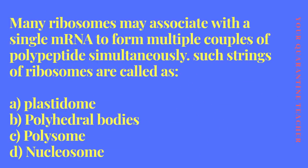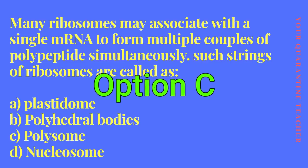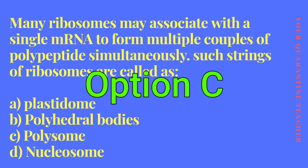Many ribosomes may associate with a single mRNA to form multiple polypeptides simultaneously. Such strings of ribosomes are called: Option A: plastidome, Option B: polyhedral bodies, Option C: polysome, Option D: nucleosome. The answer is Option C — polysome.